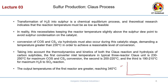If we draw conversion versus temperature — from 500 K to 1000 K — the H2S conversion follows a decreasing trend with increasing temperature. At lower temperatures, H2S is converted to sulphur more favorably. However, we must keep the reactor temperature slightly above the sulphur dew point to avoid sulphur condensation on the catalyst. If below ~500 K, sulphur may be in liquid state and drop onto the catalyst, causing deactivation.